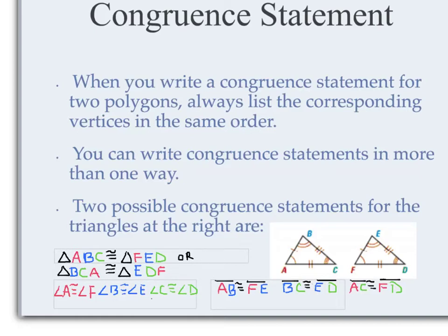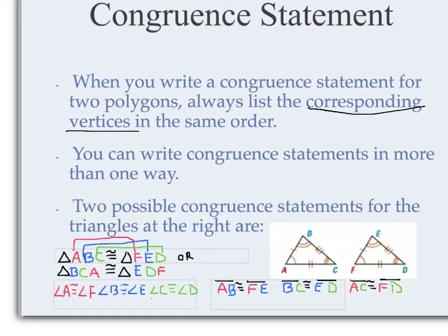The corresponding parts have to be written in the same order. Notice in the congruent statements that red matches with red, blue matches with blue, and green matches with green. So we say the corresponding vertices have to be written in the same order — that was the very first rule.